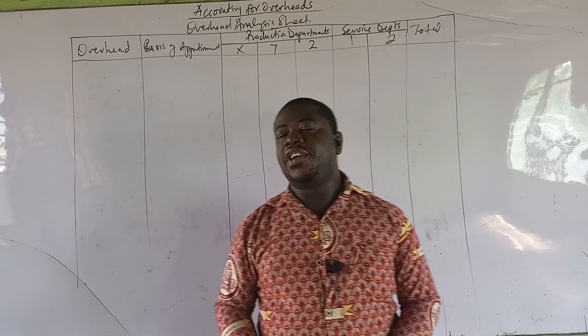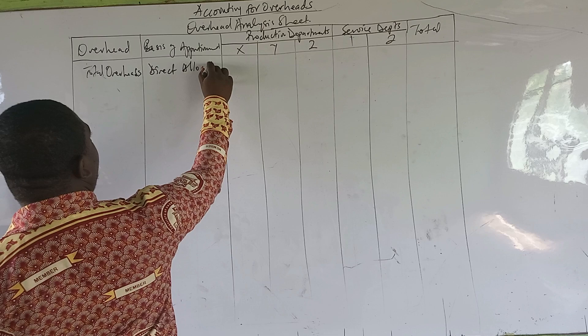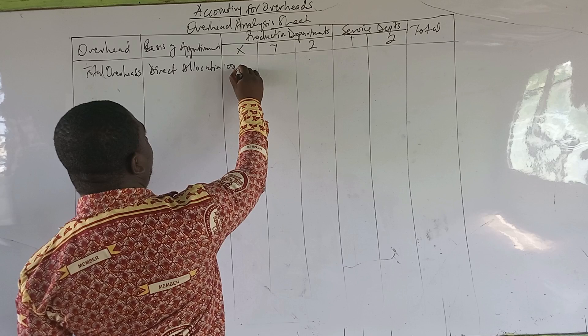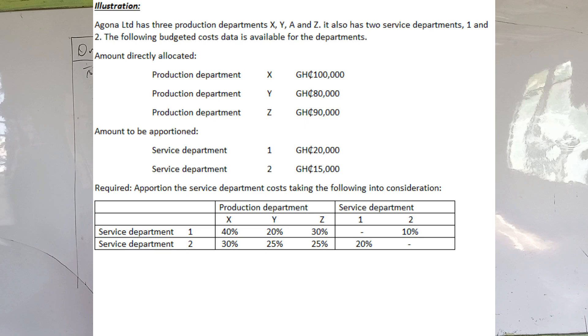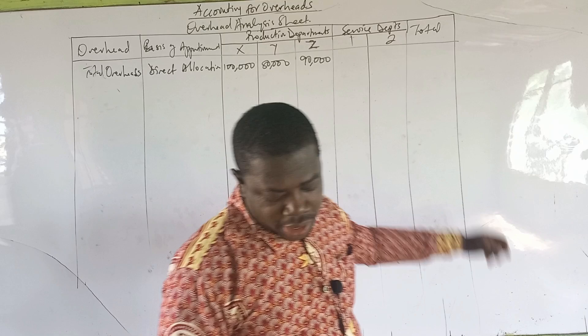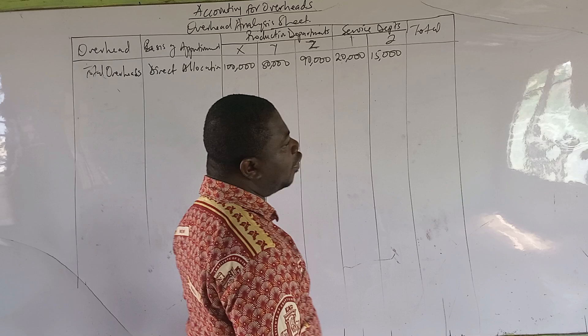As I told you, in this question they gave us the totals already, so we begin from total overheads and the basis is direct allocation. The total for production department X is 100,000, Y is 80,000, and Z is 90,000. Then we look at the service departments from the question.